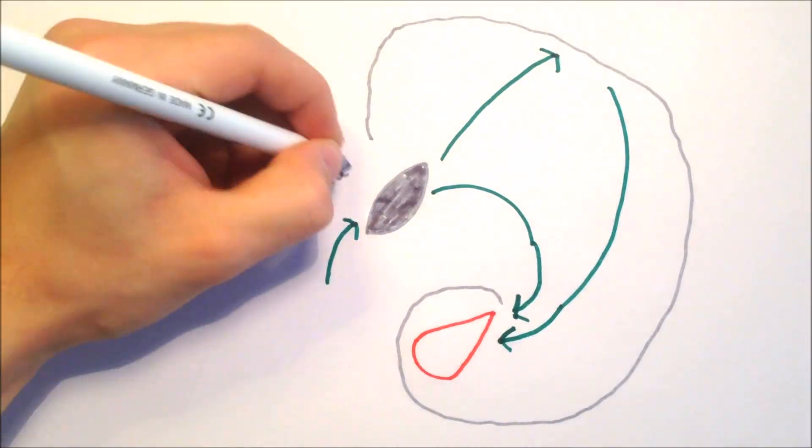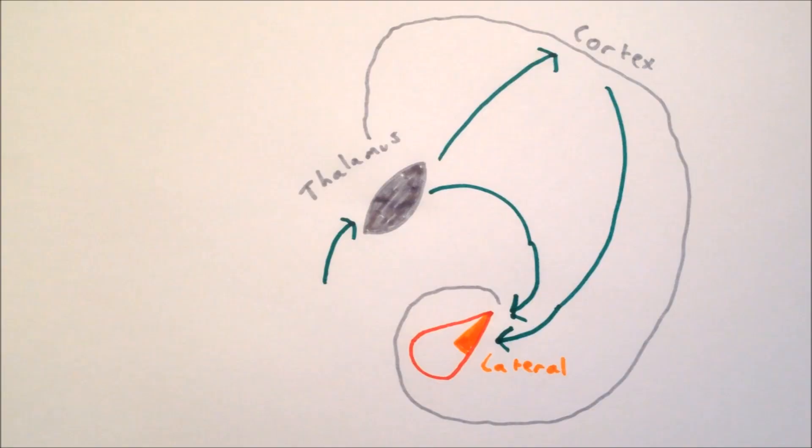The lateral nucleus is the primary input nucleus of the amygdala. It receives inputs from the thalamus and the cortex, which provide it with information about the sensory stimuli the animal is experiencing.